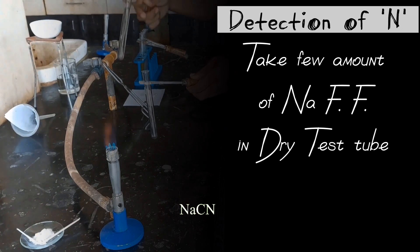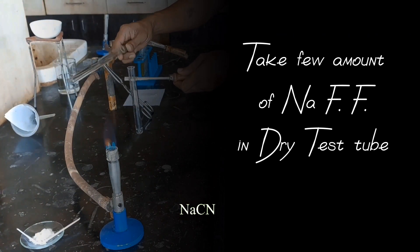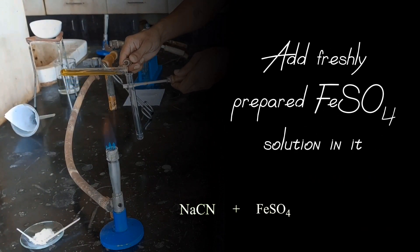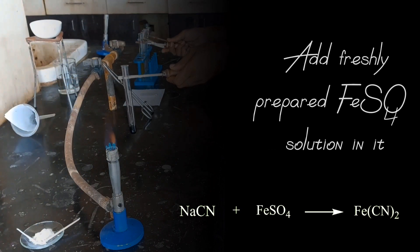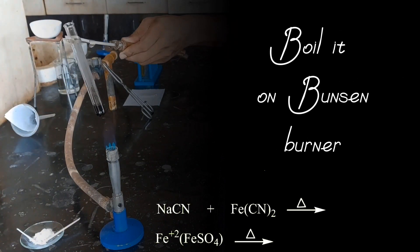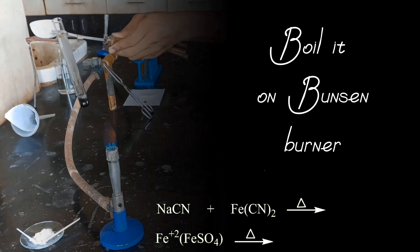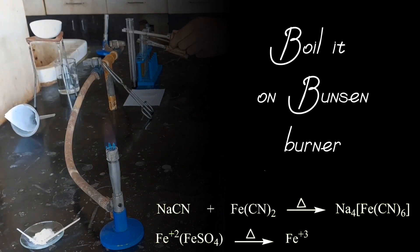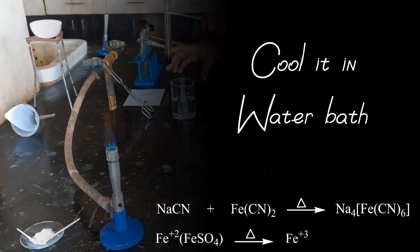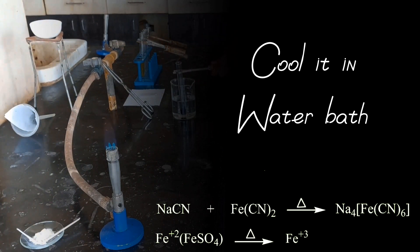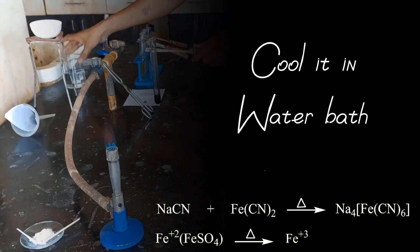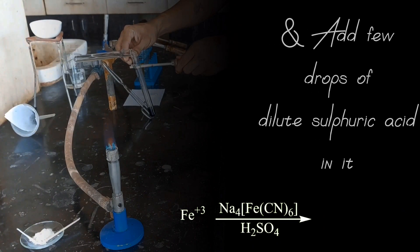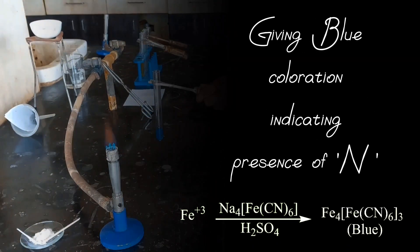Let us do detection of Nitrogen. Take few amount of sodium fusion filtrate in dry test tube. Add freshly prepared ferrous sulphate solution in it. Boil it on Bunsen burner. Cool it in water bath and add few drops of dilute sulphuric acid in it, giving blue coloration indicating presence of nitrogen.